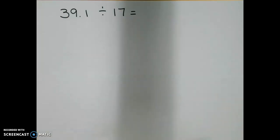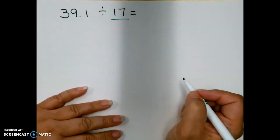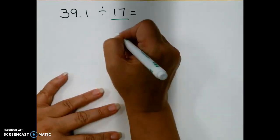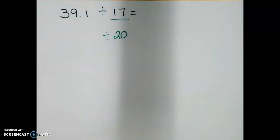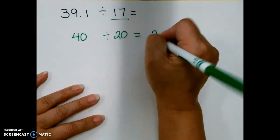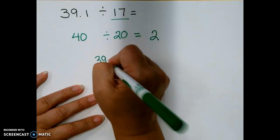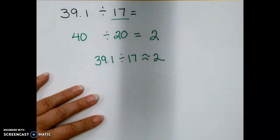All right friends, so the first problem we're going to start off with is 39.1 divided by 17. Now we're going to round the divisor first. So 17 is close to what number that'll make this easy to divide? It's close to 20. So we're going to divide by 20. Now, what can I round 39.1 to that could be easily divided by 20? I can round that to 40. And I know that 40 divided by 20 is 2. So 39.1 divided by 17 is about 2. Make sure you're writing this down.